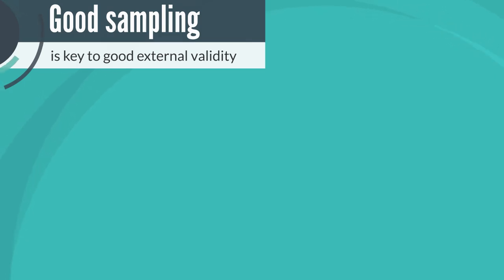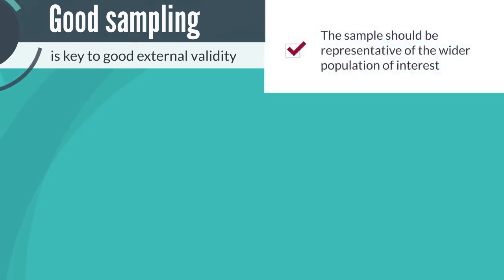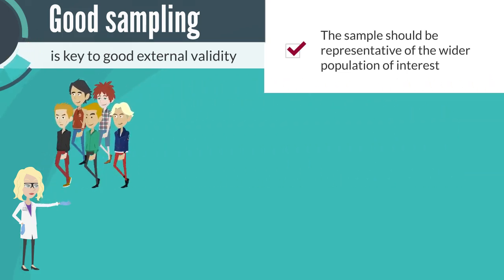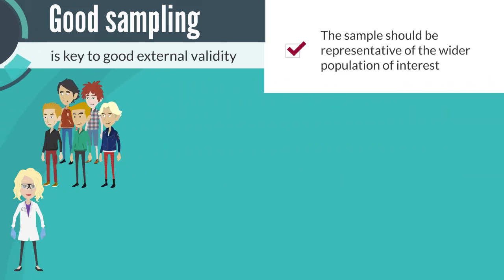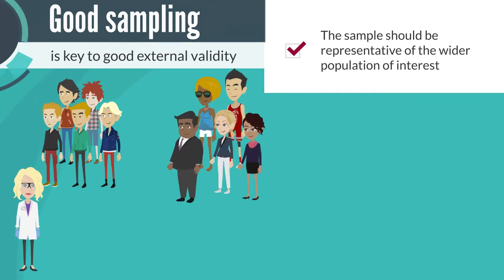Here are some features of strong sampling in studies. Firstly, you should ensure a sample is representative of a wider population, or at least the population you want to generalise to. For example, if someone is conducting a phase one clinical trial to examine the safety of a new drug, and they only recruit male Caucasian university students from one hospital, their study will be less generalisable than if they sampled from both genders across multiple ethnicities at multiple sites across the world.